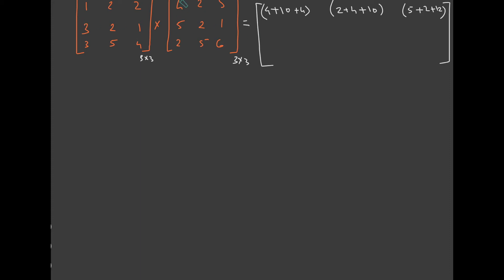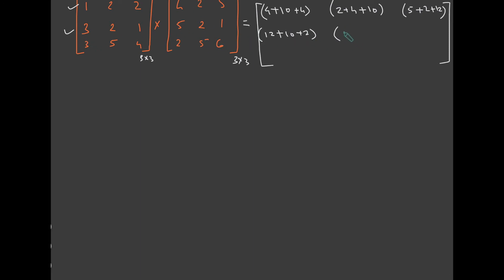Now work with the second row — multiply it with all three columns. Multiply this row with the first column: 3 times 4 is 12, 2 times 5 is 10, and 1 times 2 is 2. Then multiply the second row by the second column: 6 plus 4 plus 5. Then the second row with the third column: 15 plus 2 times 1 is 2, and 1 times 6 is 6.